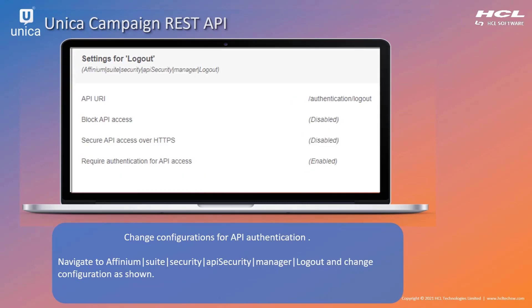For the next configuration, navigate to Affinium Suite, then Security, then API Security Manager, then Logo, and change the configuration. You need to put the values as displayed on the screen.